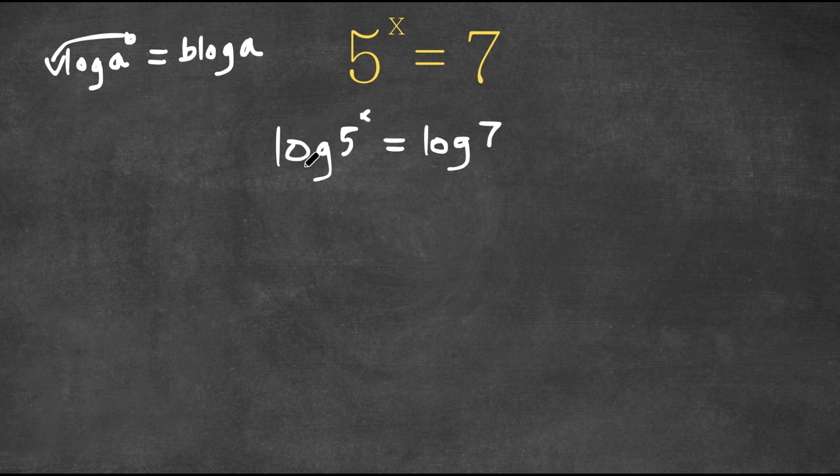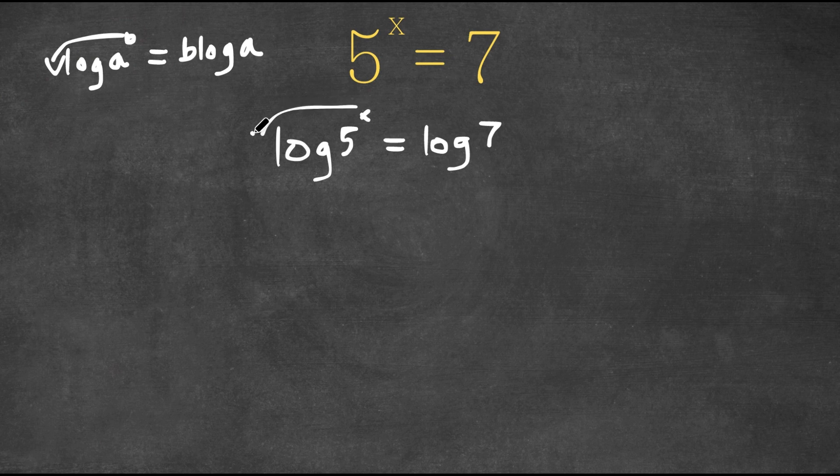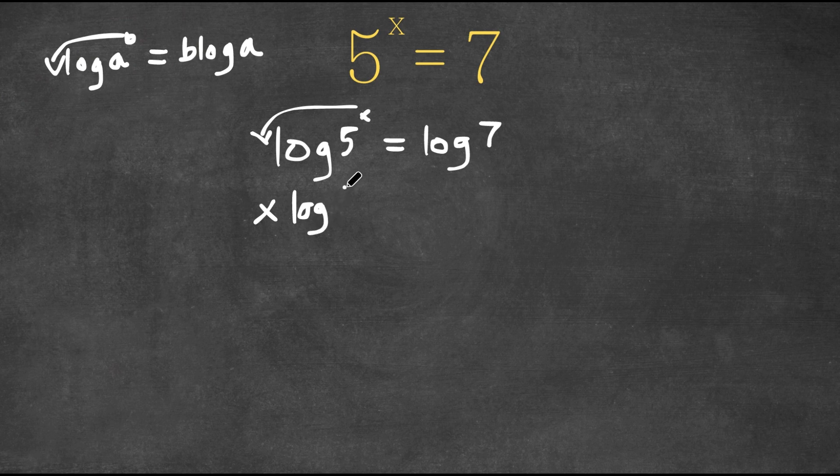So right here, we have log 5 to the power of x, and we can actually move our x into the front of the logarithm. So now this would be equal to x times log 5, and this is equal to log 7.